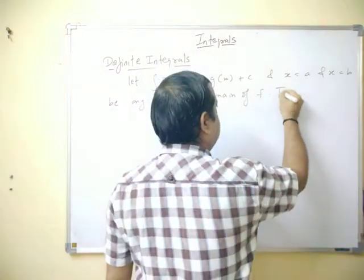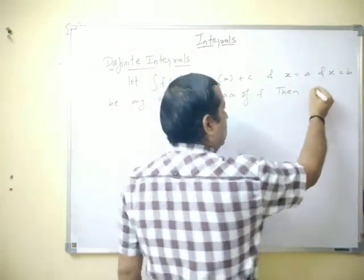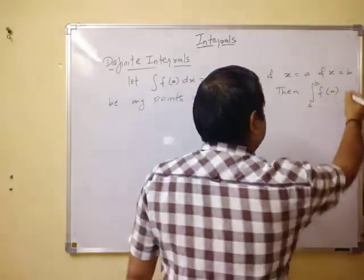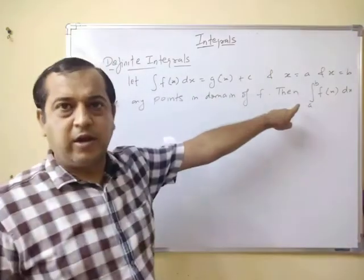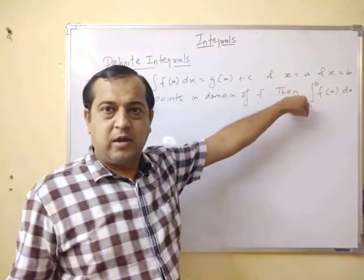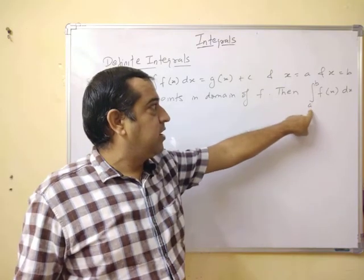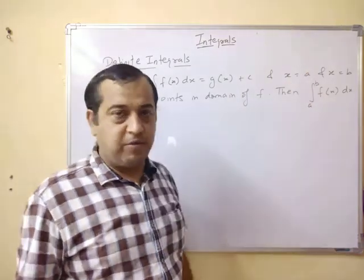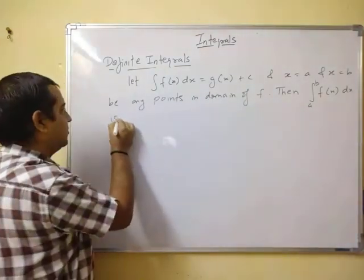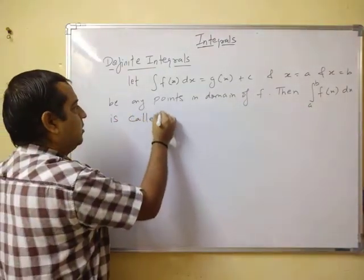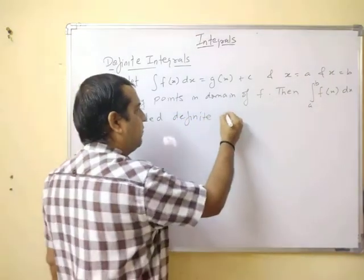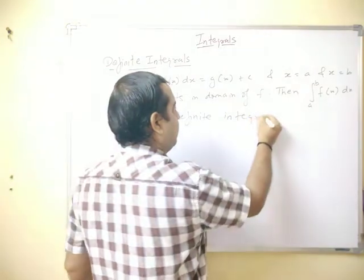Then this integral — with a at the lower part and b at the upper part of the integral sign — integral from a to b of f(x)dx is called the definite integral.